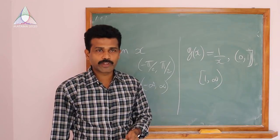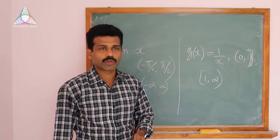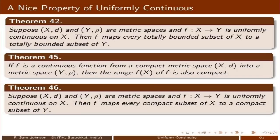For a continuous function from a compact metric space to a compact metric space, its range is also compact — continuity sends compact sets to compact sets. The same holds for uniformly continuous functions, since every uniformly continuous function is continuous. So a uniformly continuous function on X maps every compact subset to a compact subset of Y. We have seen that uniformly continuous functions carry totally bounded sets, Cauchy sequences, and compact sets to sets of the same type.